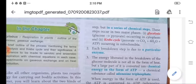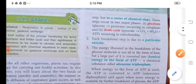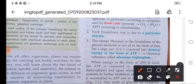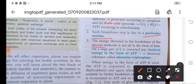Now every step or every breakdown in respiration process is carried out with the help of a particular enzyme. Now this energy which is liberated by the breakdown of glucose molecule is not in the form of heat, but a large part of it is converted into chemical energy in the form of ATP. Now the full form of ATP is adenosine triphosphate.